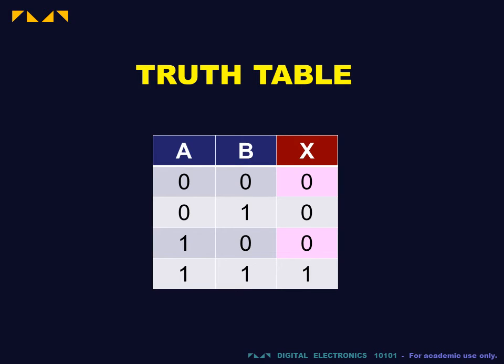The truth table is used to show the output for all possible input states. The inputs are arrayed in columns on the left, the output on the right. For two inputs, there are four possible input states arranged in rows. The order of the input states corresponds to that of binary counting.